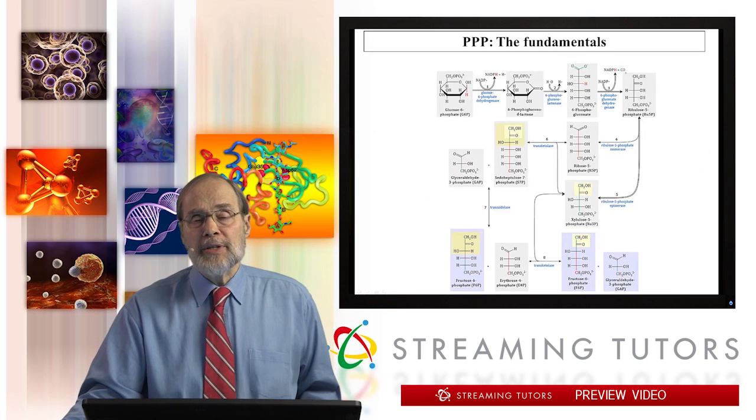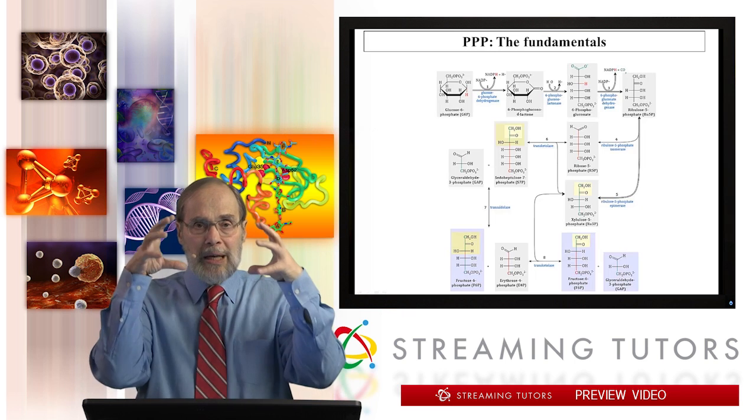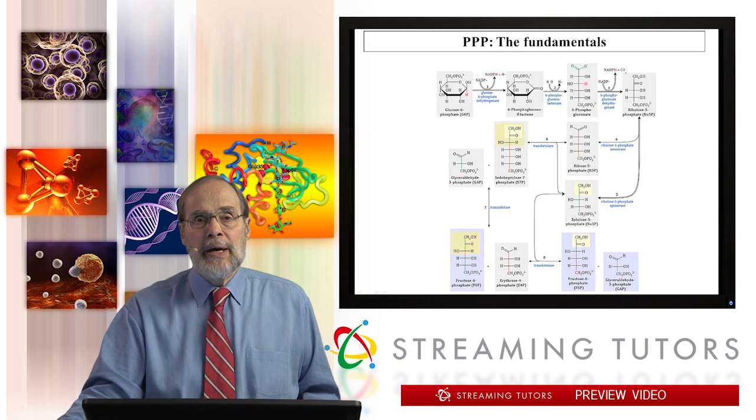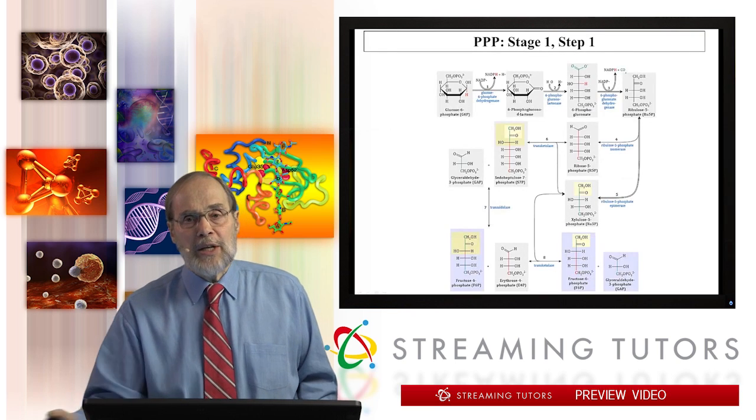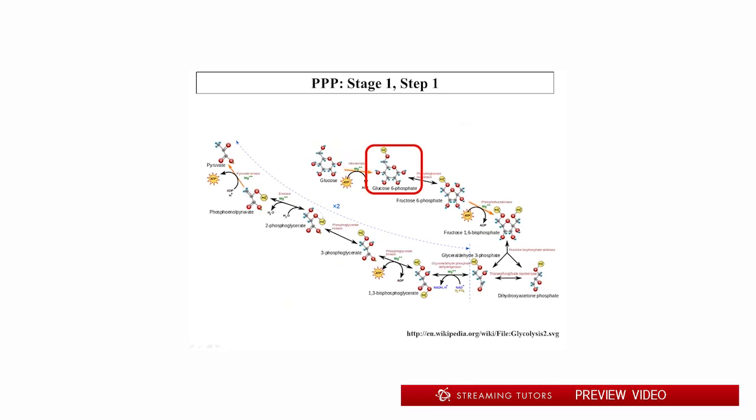Okay, so here is the entire pentose phosphate pathway. We're going to zoom in and look at these pieces one at a time. So let's look at what's called stage one. That's the first step that branches off of glycolysis. We start with glucose 6-phosphate, and then instead of isomerizing it to fructose 6-phosphate, which is what glycolysis would do, we're going to oxidize it.